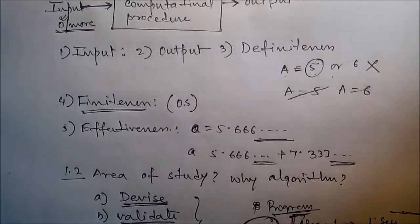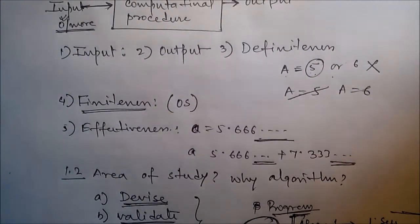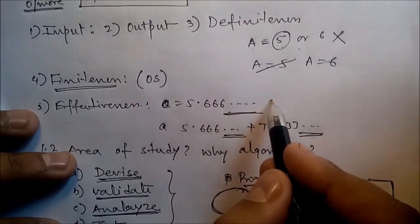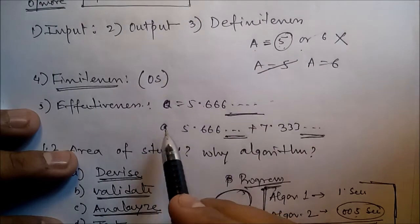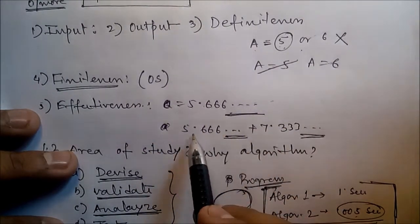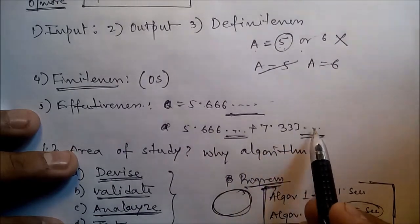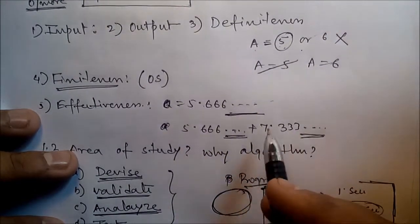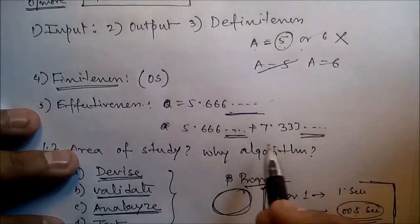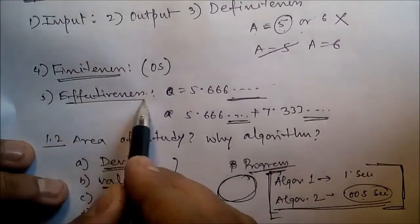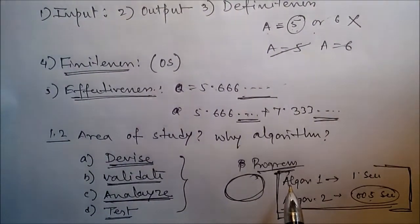Next is effectiveness. Every instruction must be very basic so that it can be carried out in principle by a person using only paper and pencil. It should be feasible. We cannot write 'A = 5.666...' - we have to stop somewhere. Can you add 5.666... plus 7.333... by paper and pencil? We can't, so obviously the computer can't either. The algorithm should be effective.